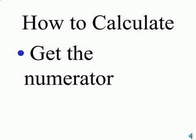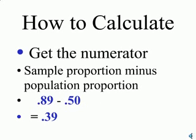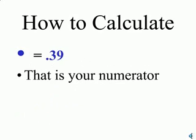We then have to get the numerator. We take the sample proportion minus the population proportion. Here we take the 0.89 of our sample that were female and subtract the 0.5 which was the proportion of females in the population and we get 0.39. That is your numerator. It represents the difference between the sample proportion and the population proportion.